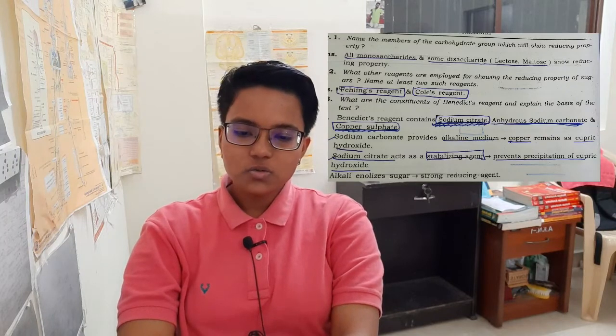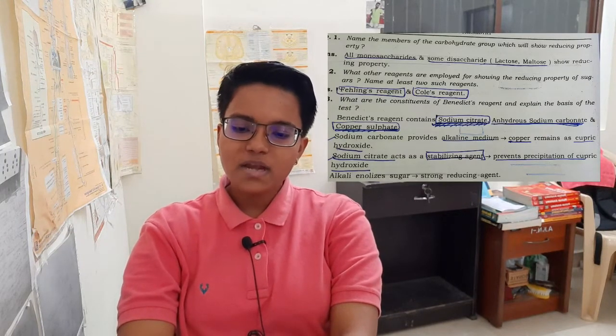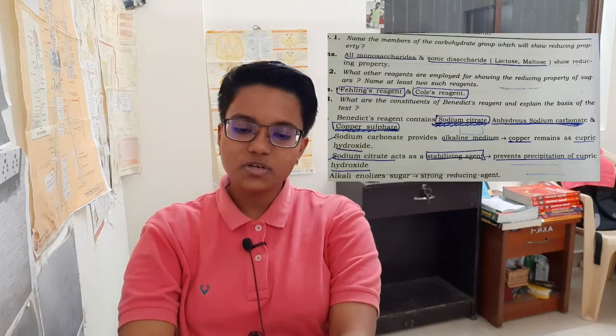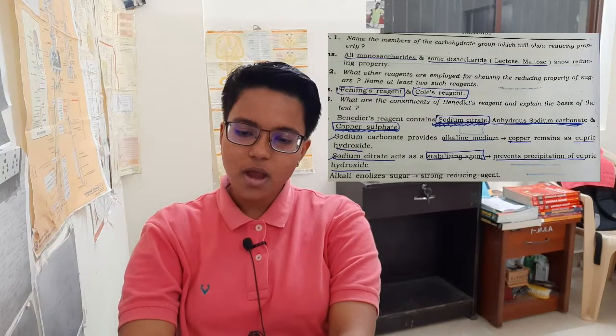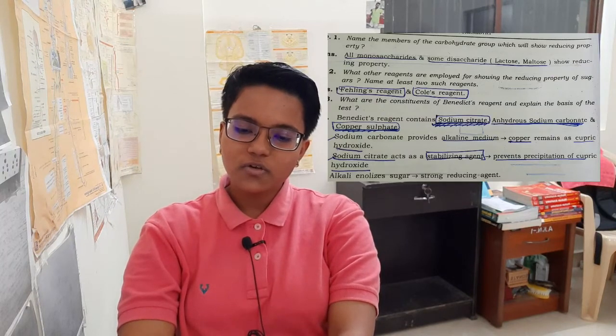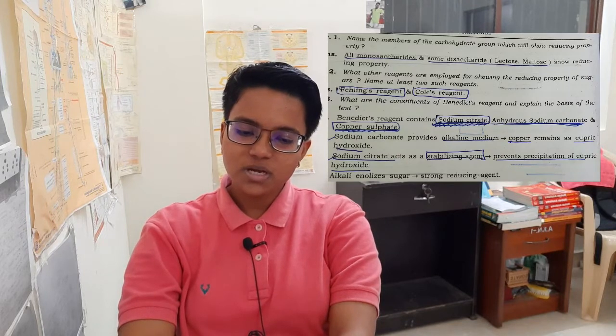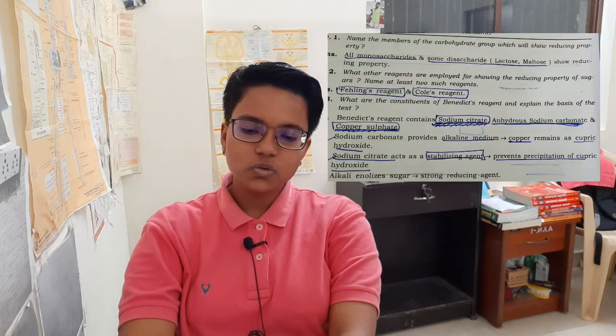What are the constituents of Benedict's reagent and what is the basis of the test? Benedict's reagent contains sodium citrate, anhydrous sodium carbonate, and copper sulfate. Sodium carbonate provides an alkaline medium. Copper remains as cupric hydroxide. Sodium citrate acts as a stabilizing agent, preventing precipitation of cupric hydroxide. The alkali-activated sugar is a strong reducing agent.